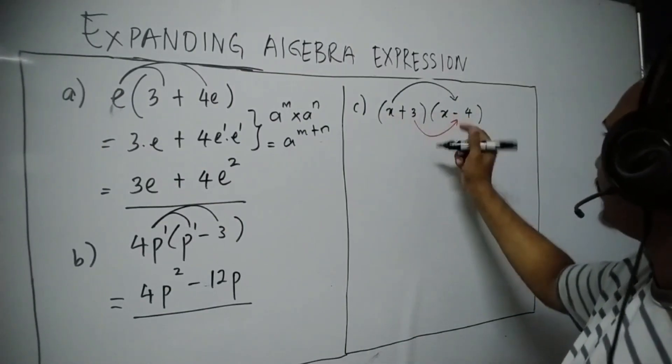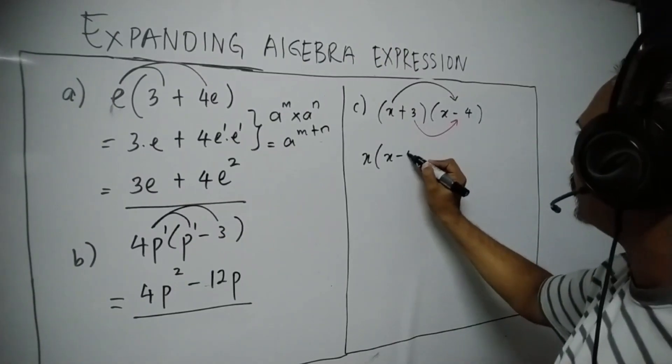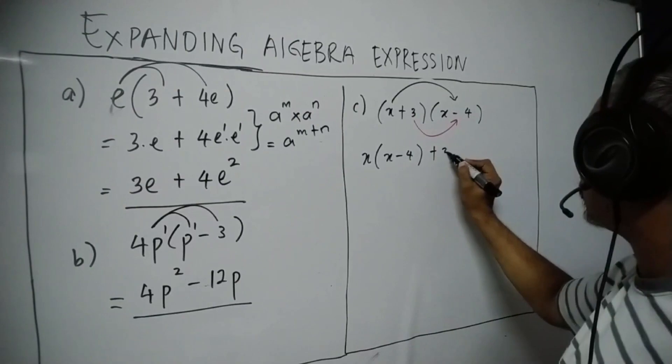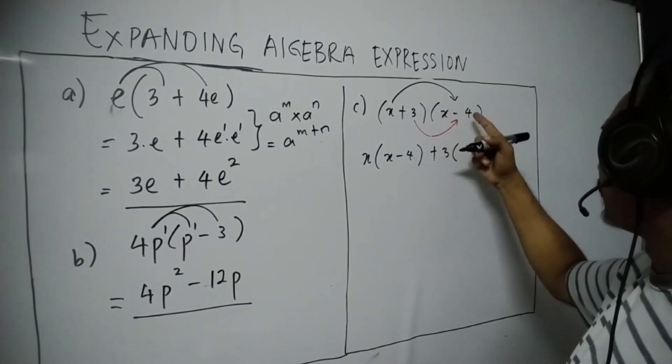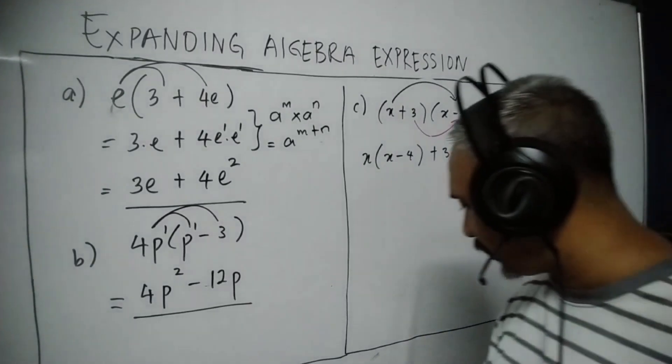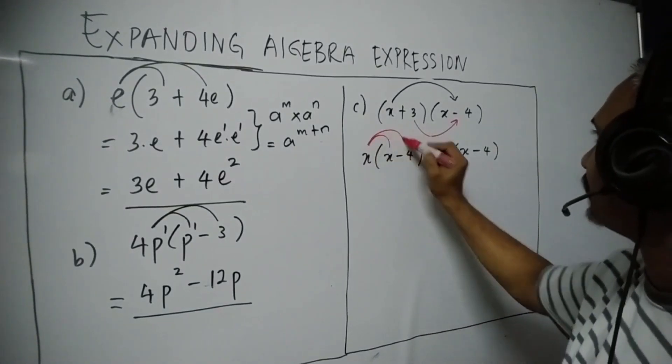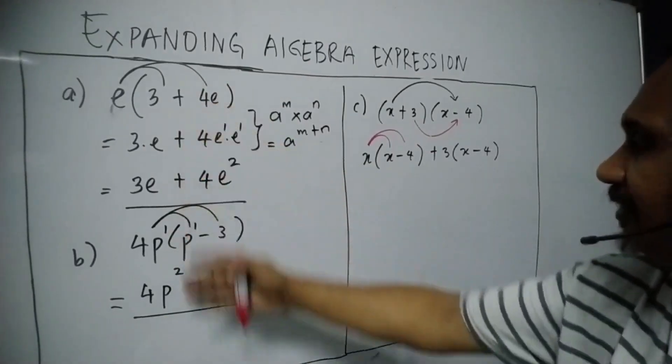So what we can write now is the first X will be expanded with X minus 4. And here is plus 3 will expand with the behind expression here, X minus 4. And further of this, we will expand like what we have done, expansion on this left hand side here.